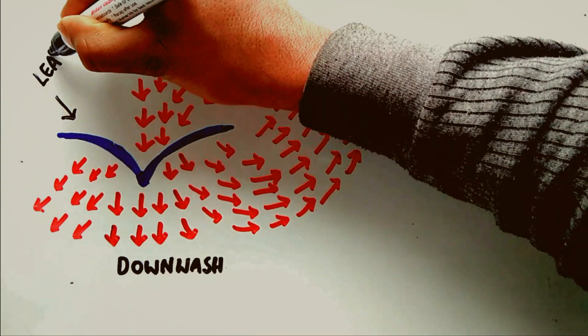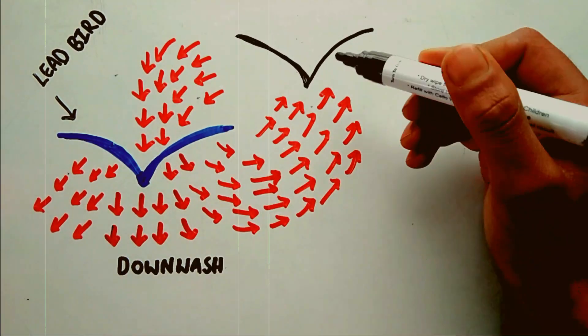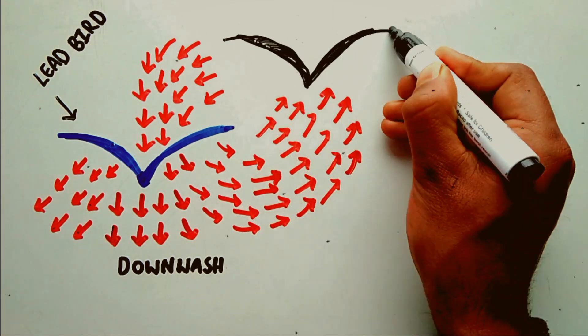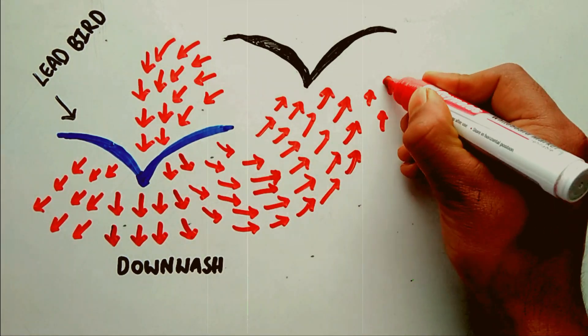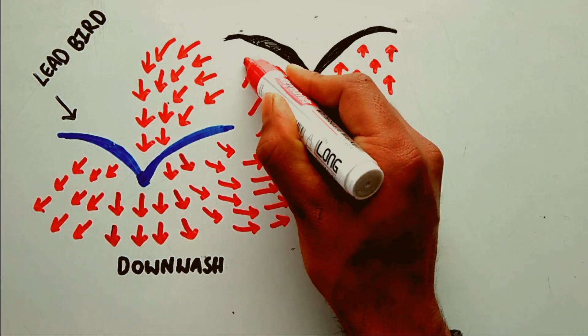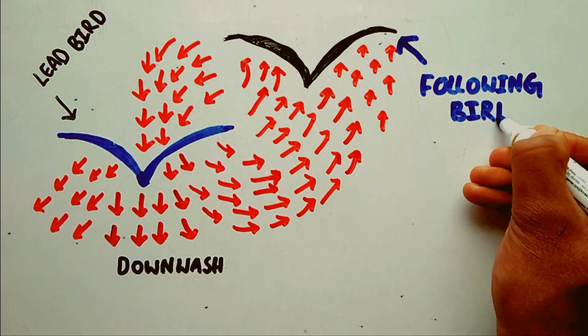If a trailing bird positions itself in the upflow part of the vortex, it receives a free lift. It still must flap to stay aloft, but it does not have to flap quite as hard, and thus its energy expenditure is not quite as much.